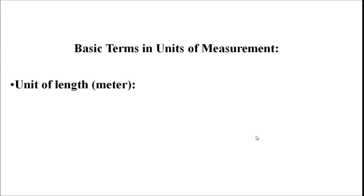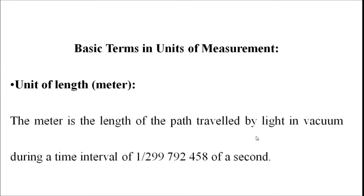The first basic term in units of measurement is the unit of length. Length is determined in meters. One meter is the length of the path traveled by light in vacuum during a time interval of 1/299,792,458 of a second.